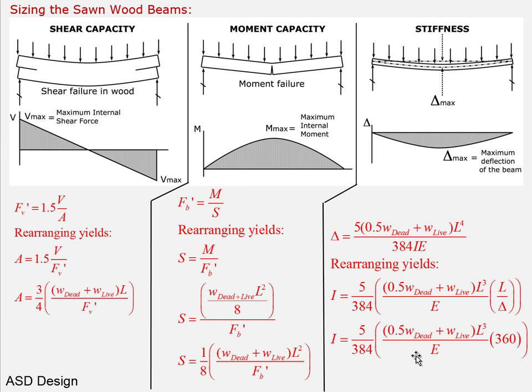For deflection, delta/L must be less than 1/360, and E is prescribed by the material supplier. We solve for the required moment of inertia I: I = (5/384) × load factor × L⁴ / E, where L/delta = 360. The load in this equation uses one-half of W_dead plus W_live, because wood exhibits creep — unlike steel, which is perfectly elastic. This accounts for long-term deformation under sustained dead load.